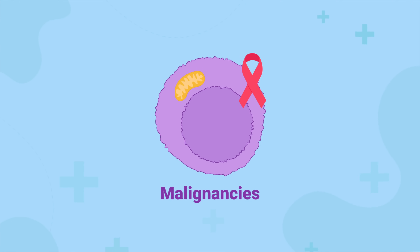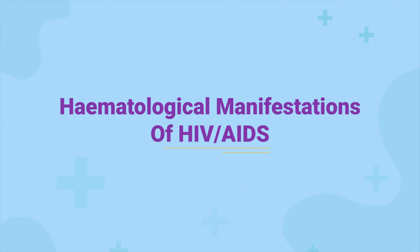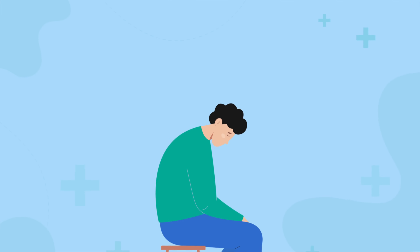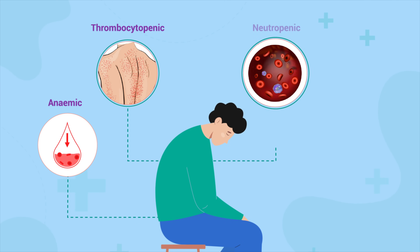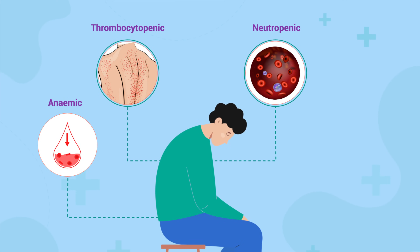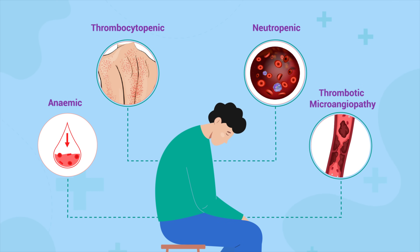This time, we'll dive into the hematological manifestations of HIV-AIDS. HIV patients tend to be anemic, thrombocytopenic, neutropenic, and have an elevated risk of thrombotic microangiopathy.